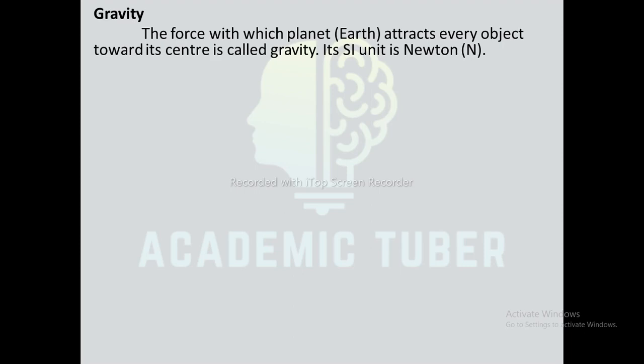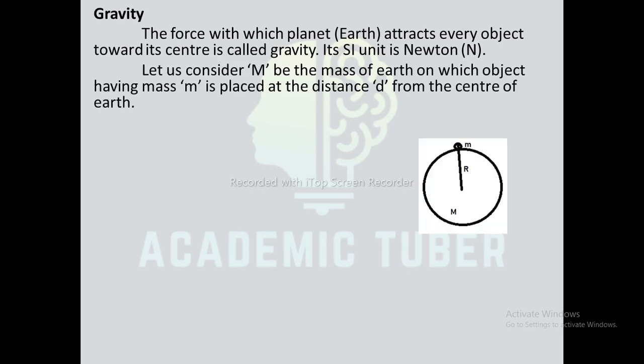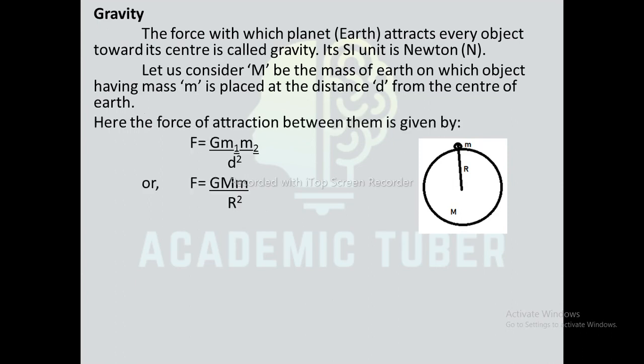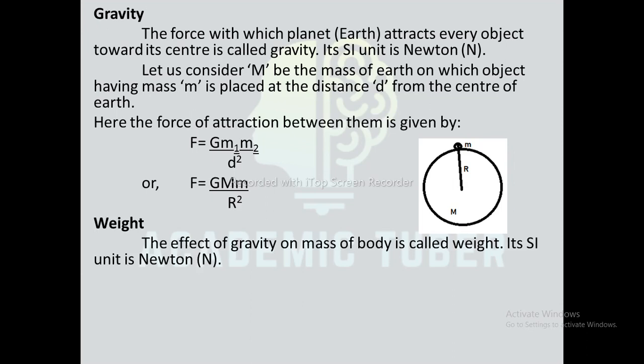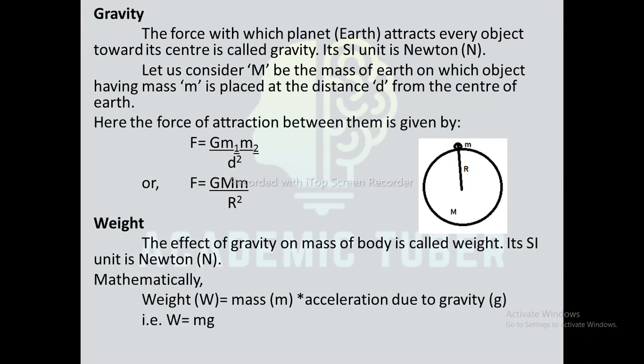Gravity: the force with which planet Earth attracts every object towards its center is called gravity, and its SI unit is Newton. Let capital M be the mass of Earth and small m be the mass of an object placed at distance r from the center of Earth. The force of attraction is F = GmM/r². Weight: the effect of gravity on the mass of a body is called weight, and its SI unit is Newton. Mathematically, W = mg.